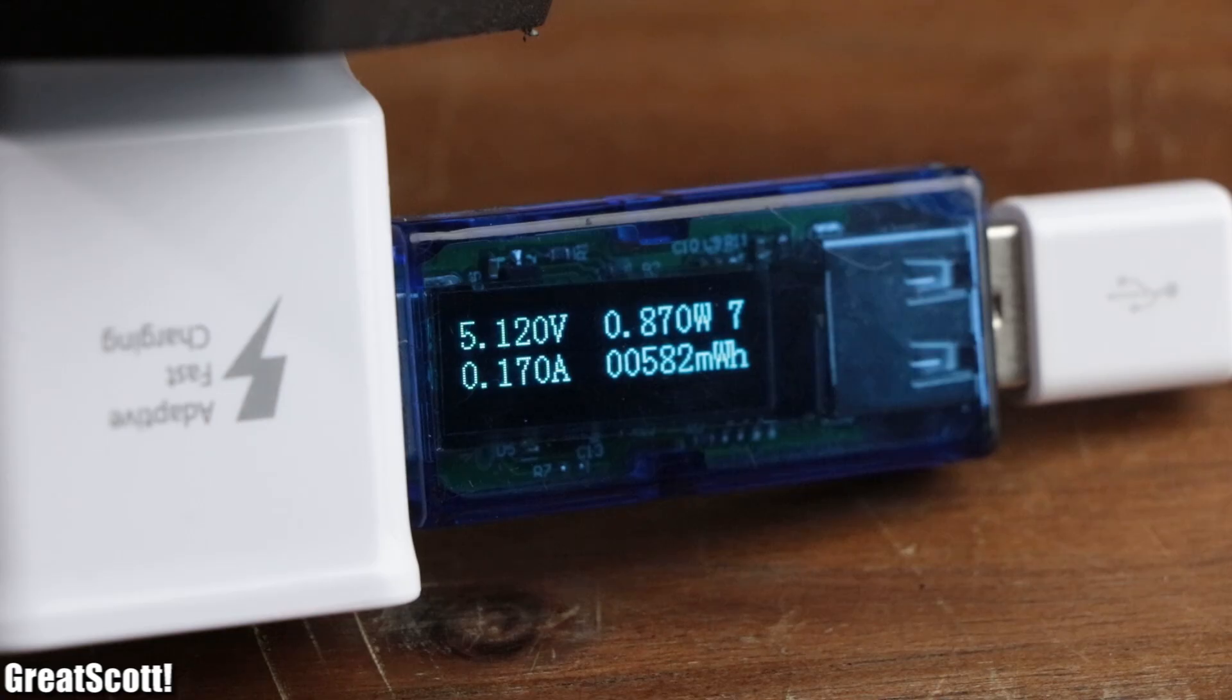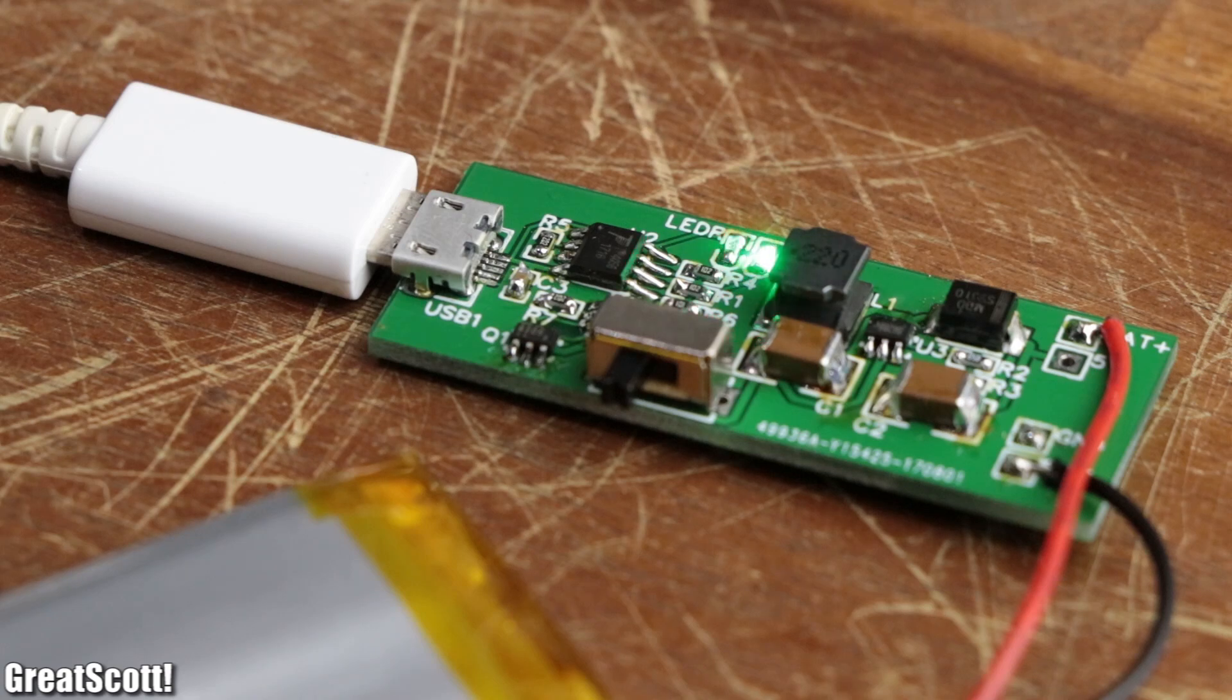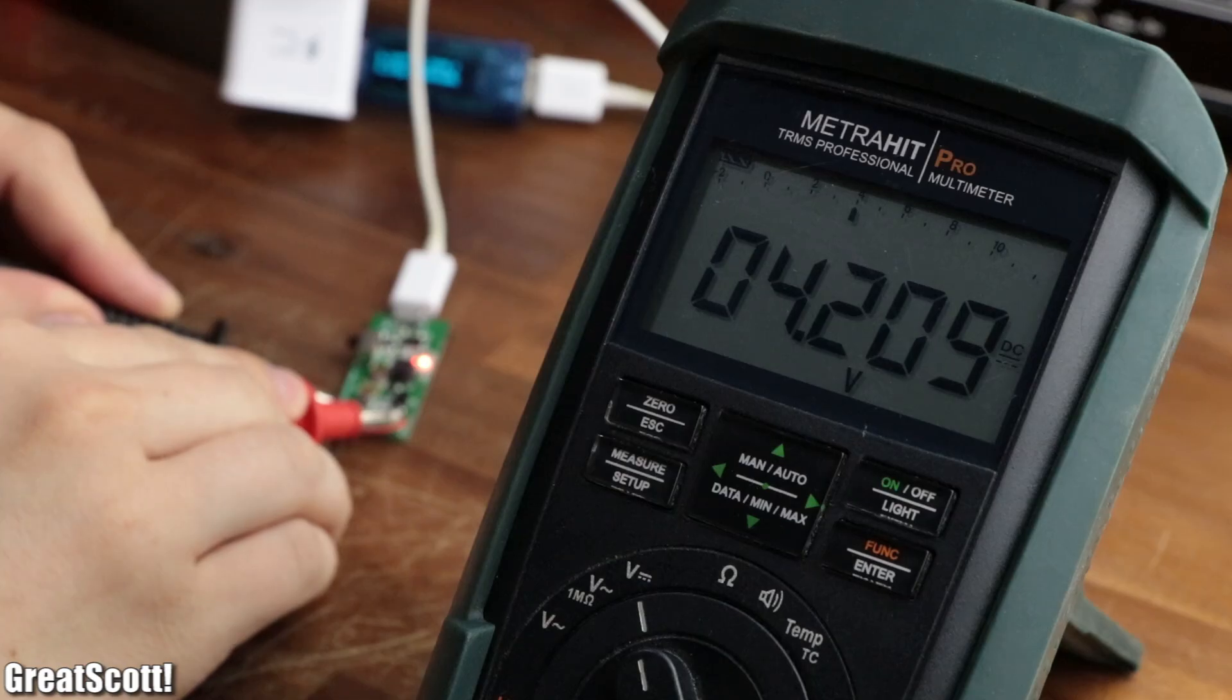After a couple of minutes of charging, the LED turned green at a cutoff voltage of around 4.209 volts, which seemed reasonable.